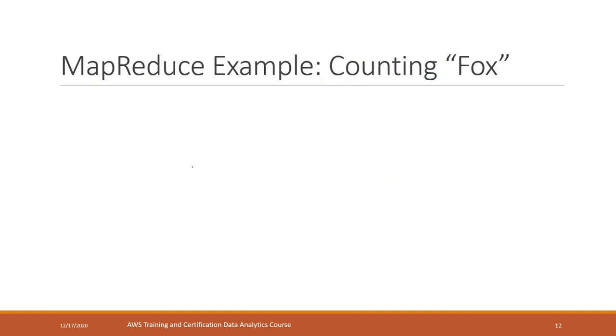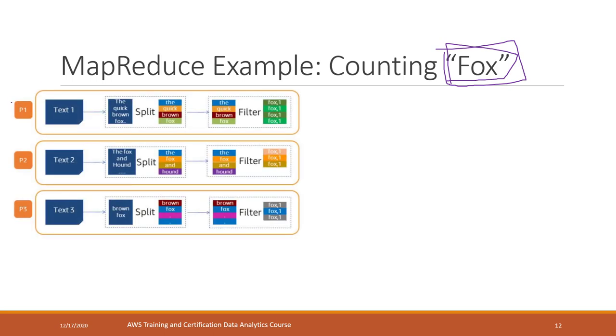Let's see one example that can help you to make more sense. For example, we have a very huge document, and we want to count the word fox. We want to count how many times that the word fox has been used in those huge documents. Here we have multiple instances, three instances to handle the text. So we split that document into three text files. And for the text files, we extract each single word. Those three computers are doing those at the same time. For the document, we split those single words - the, quick, brown, fox, the fox, and hound. So we are looking for the fox.